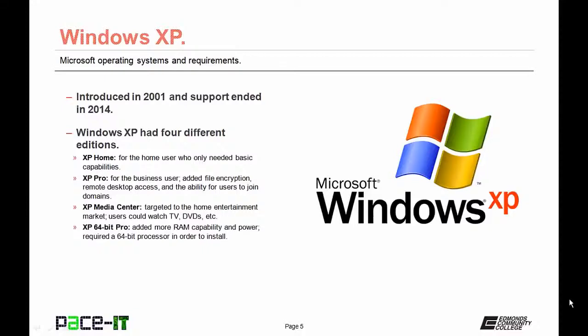XP Media Center was targeted to the home entertainment market — users could watch television, DVDs, listen to music, etc. Then there was XP 64-bit Professional, XP's only 64-bit edition. It added capability for more RAM and power but required a 64-bit processor to install.